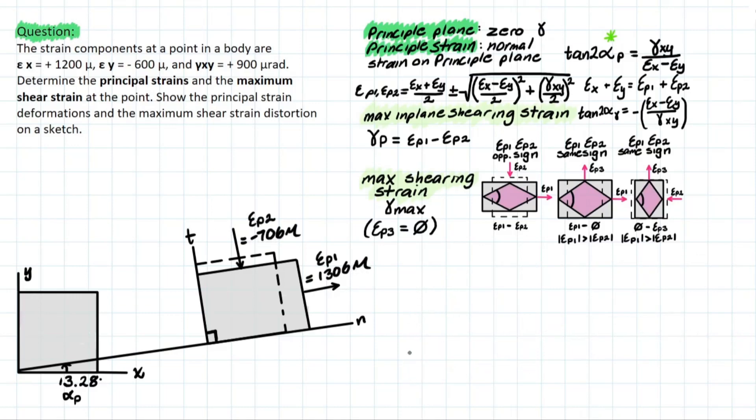Now, similarly, we have to consider where our max in-plane shearing strain is going to act as well. So we're using this other equation to determine that alpha shearing, and it's a very similar thing where we're taking that tan 2α shearing, which is equal to the negative of εx initially given minus the εy over the shearing strain XY.